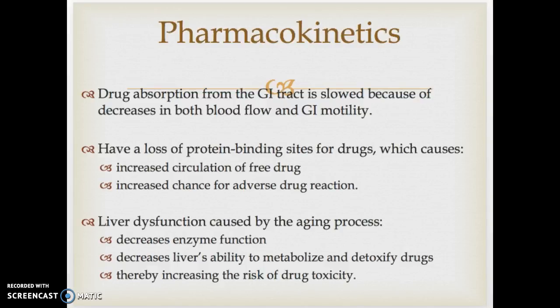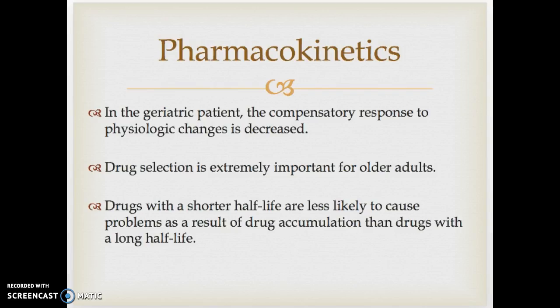Looking at drug absorption and all portions of pharmacokinetics: their GI motility is slower, their blood flow is slower, so we have to consider this. Drug selection based on pharmacokinetic factors — half-life, absorption, distribution, and drug size — is extremely important. A very healthy, well-nourished 70-year-old man may not be a big concern, but a very frail woman with osteoporosis, low weight, and poor bone density presents bigger pharmacokinetic problems. We have to think about this when considering this population.